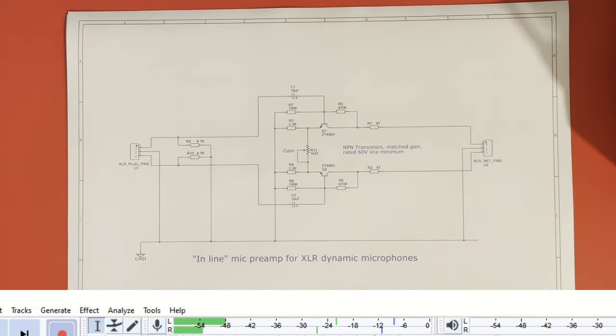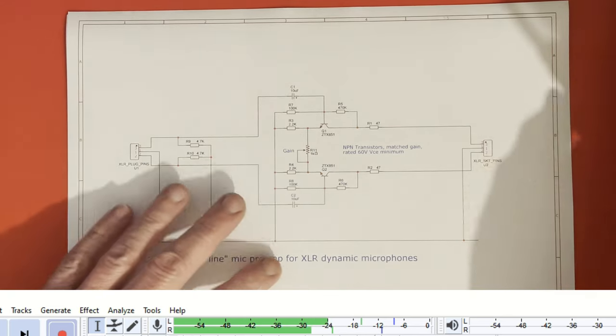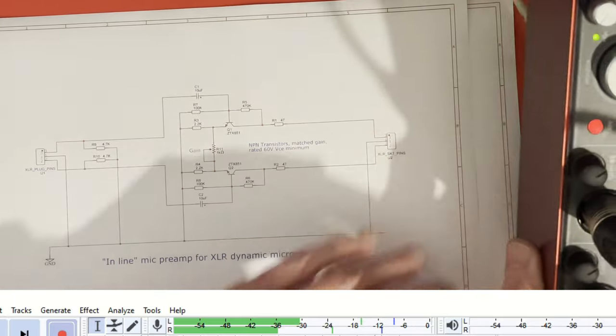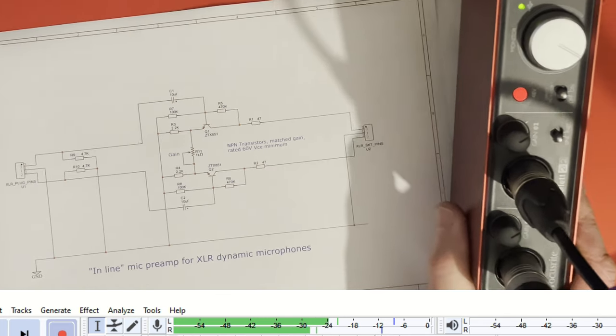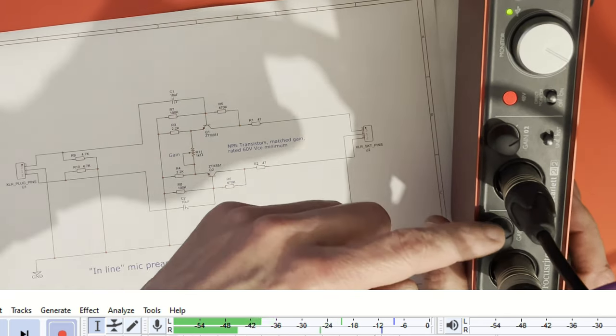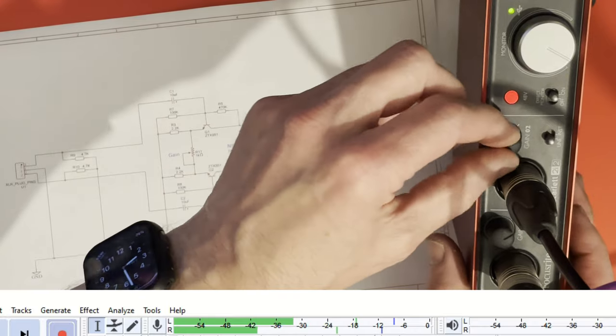I've got them both connected to a little Focusrite interface which, hopefully you can see that I've put it in the right place. You can see the controls, the level setting. I've got both levels full up.